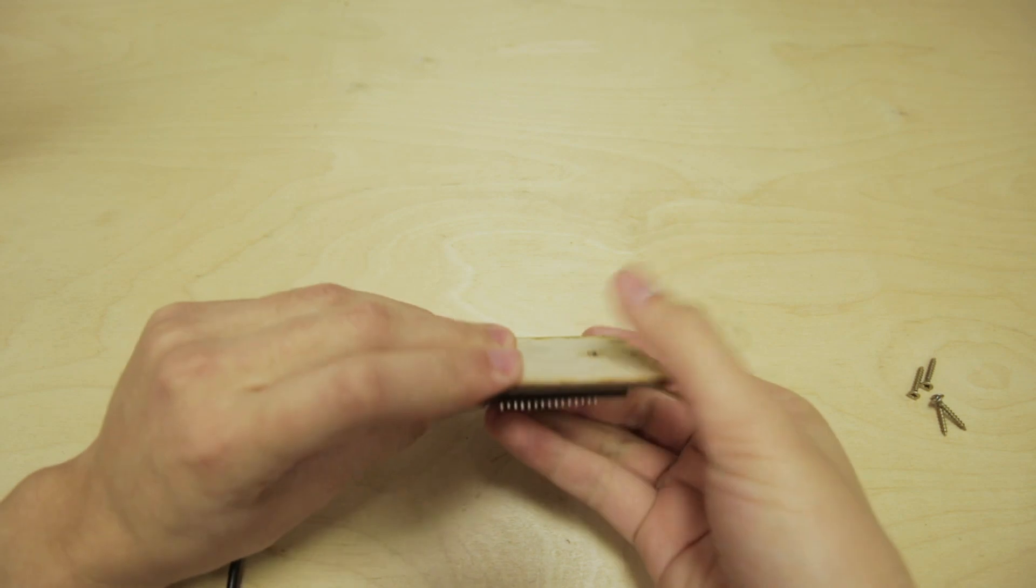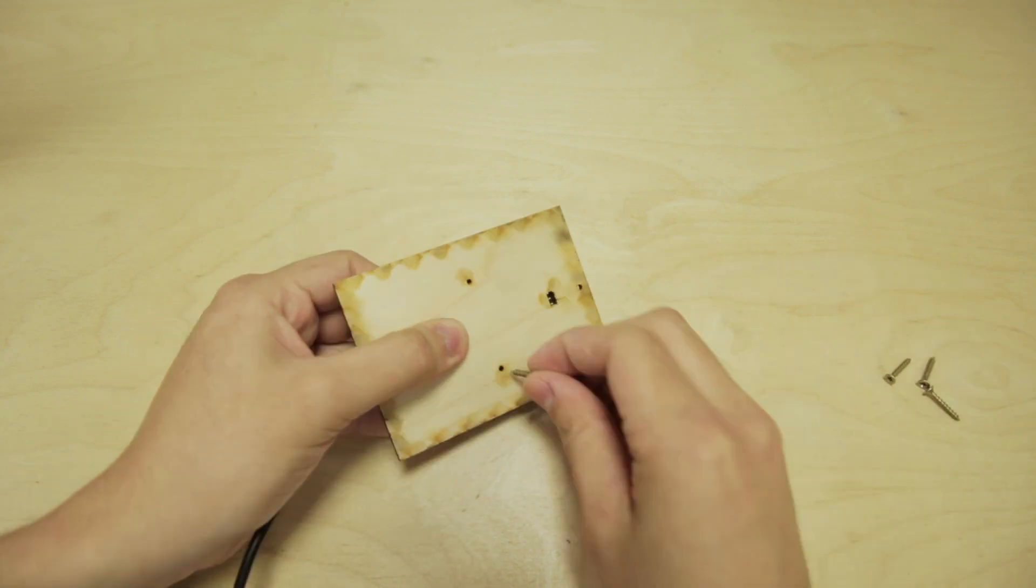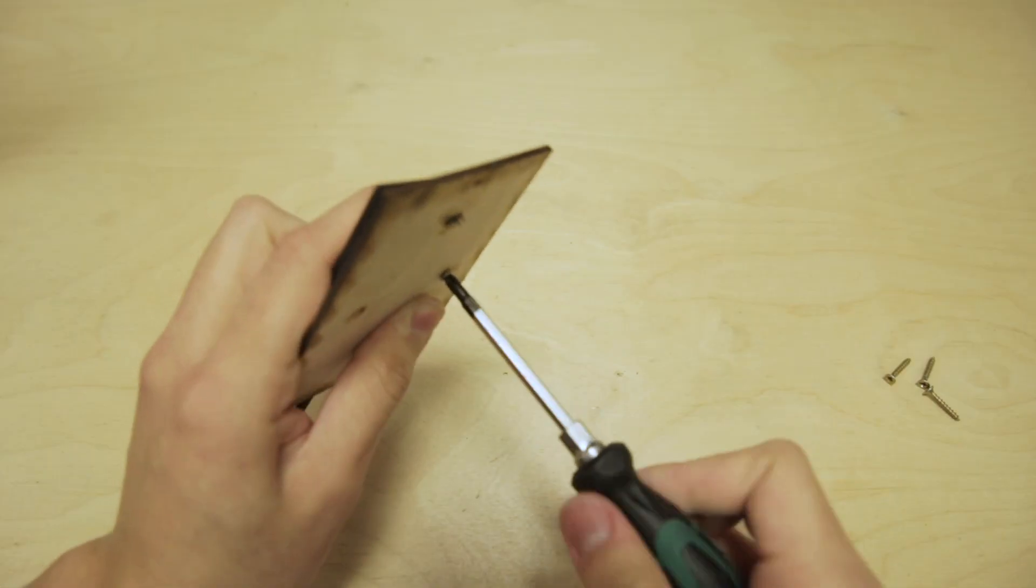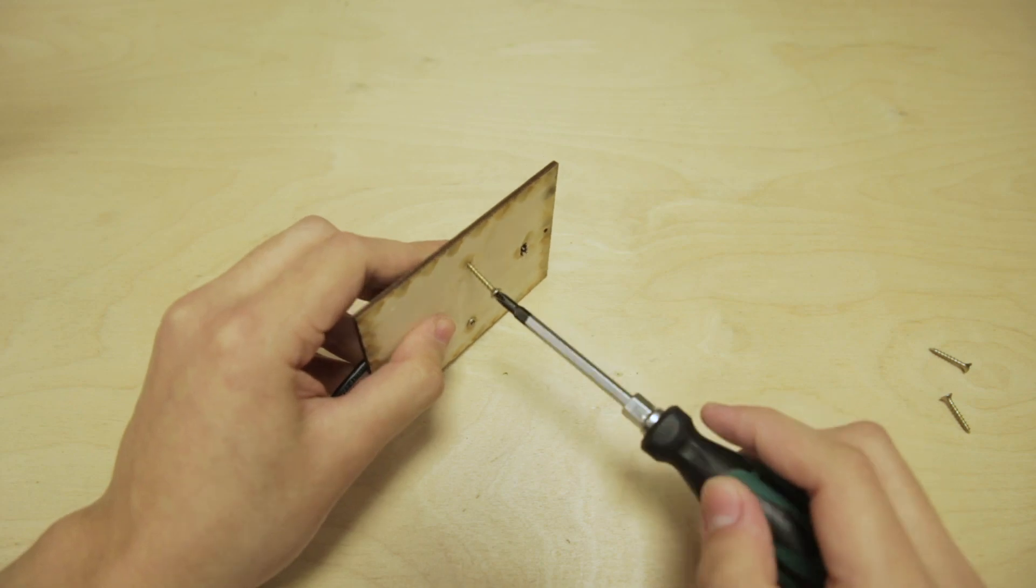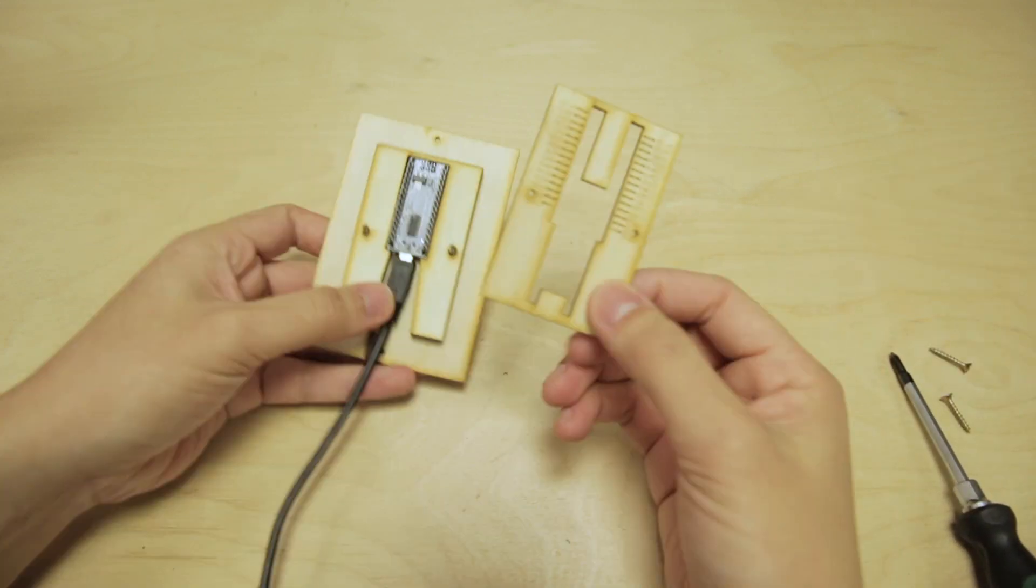Holding that together, we're going to take the screws and screw it in from the underside with these two holes here. The two pieces of plywood are nice and flush.